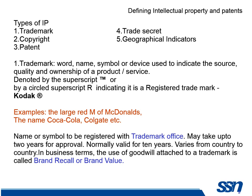A trademark is a word, name, symbol or device which indicates the source and quality of the product. It's normally given by a superscript TM or a registered trademark symbol ®. For example, Kodak is a name — the moment you say it, you think of the good things from Kodak products. Similarly, the large red M of McDonald's, the name Coca-Cola, Colgate, etc. — the moment these are seen or heard, we are reminded of good things associated with those products. That's called brand recall or brand value.